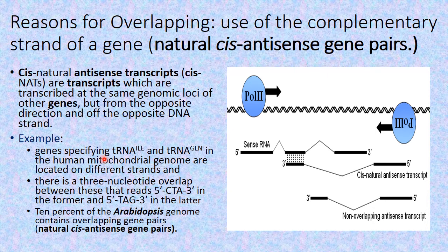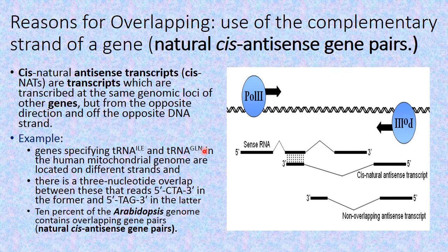This type of overlapping is of common occurrence particularly in the part of DNA that transcribes for transfer RNA. An example of such overlapping genes is the genes specified for two amino acids in the human mitochondrial genome, which are present on two different strands with overlapping nucleotide sequences.